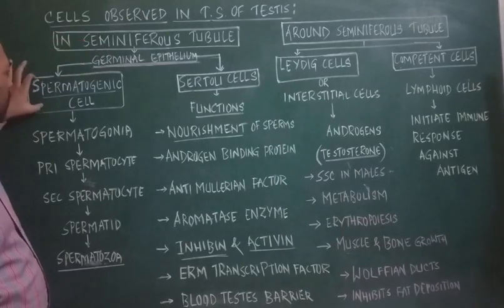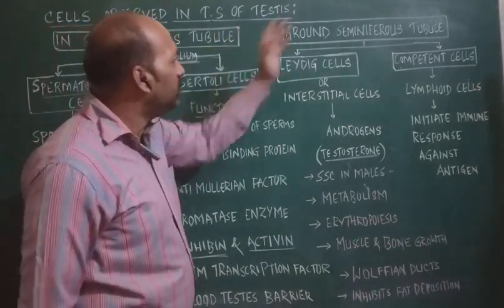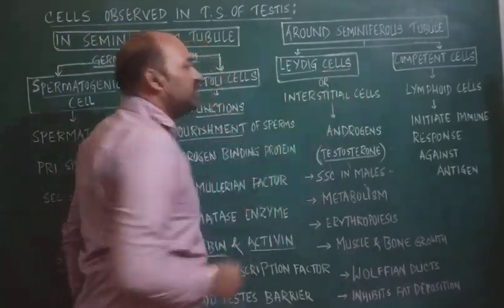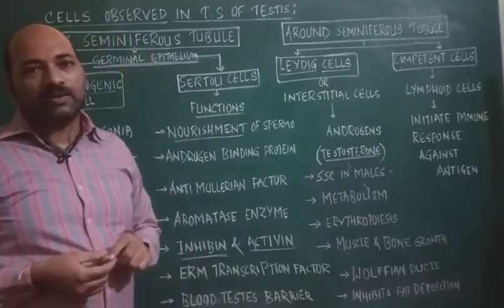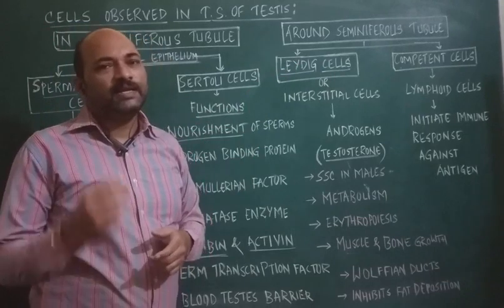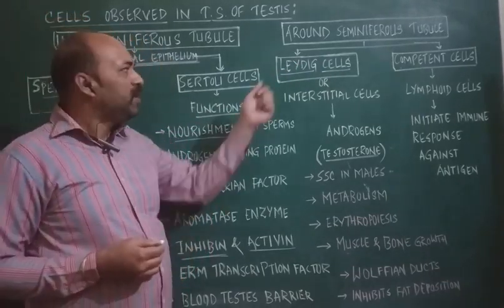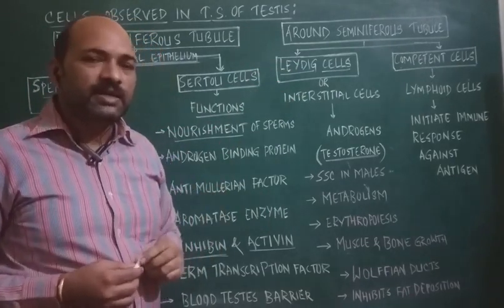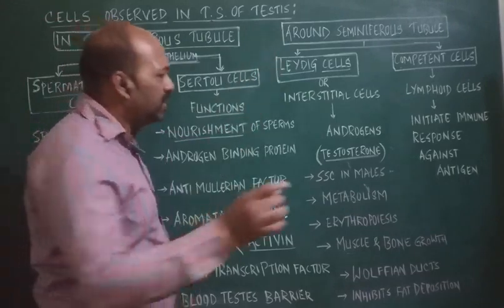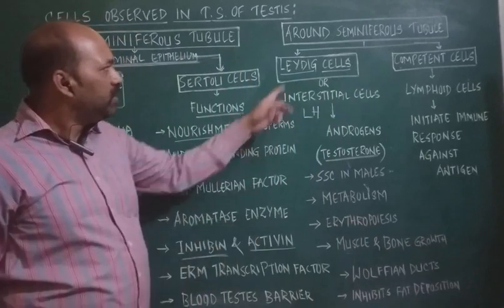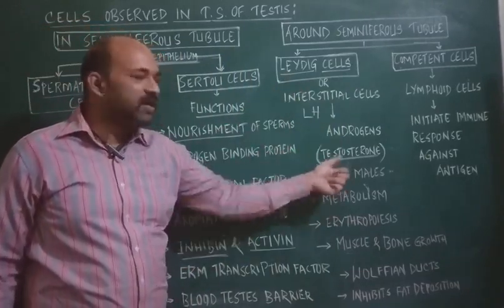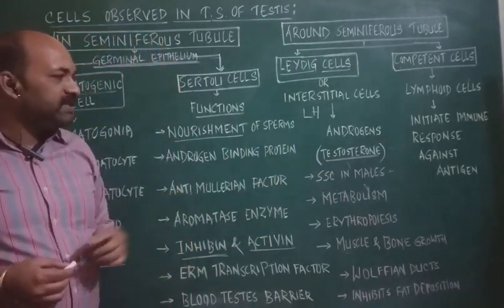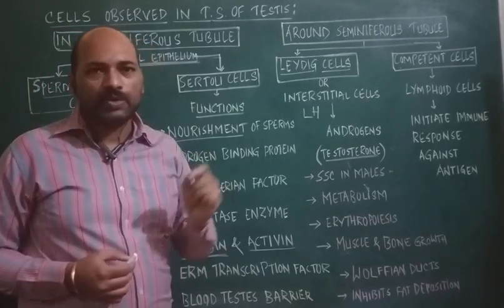Inside the seminiferous tubule, spermatogenic cells and Sertoli cells are present. Outside the seminiferous tubule there are clusters of cells called Leydig cells, discovered by Leydig. Leydig cells are yellow in color due to a yellow pigment they contain. They are also called interstitial cells as they are present in the interstitium. Under the influence of luteinizing hormone, Leydig cells secrete androgens, the main one being testosterone.